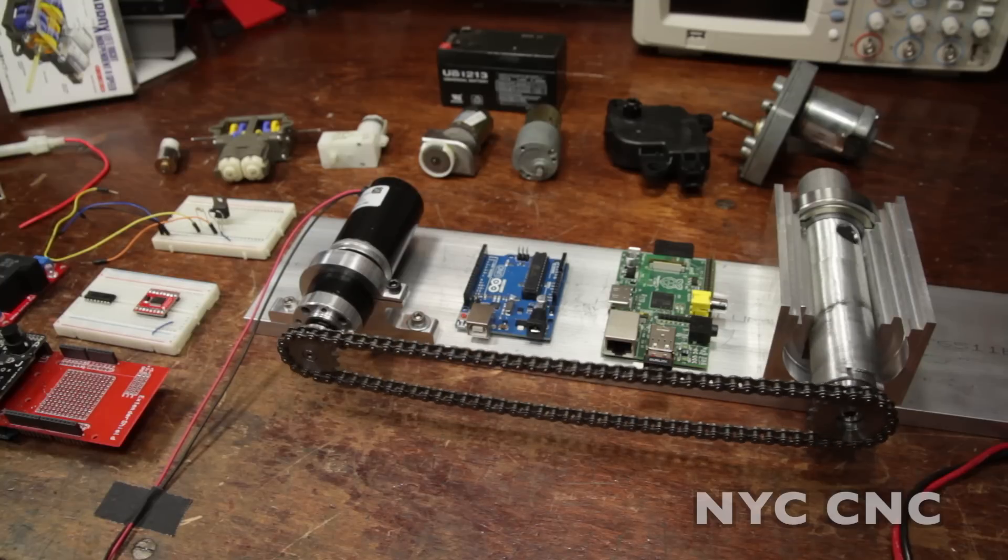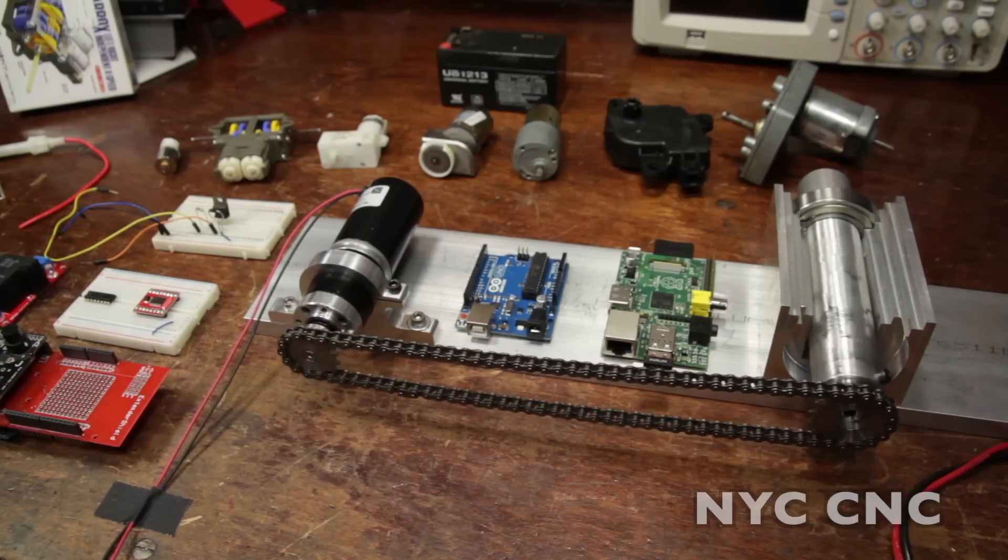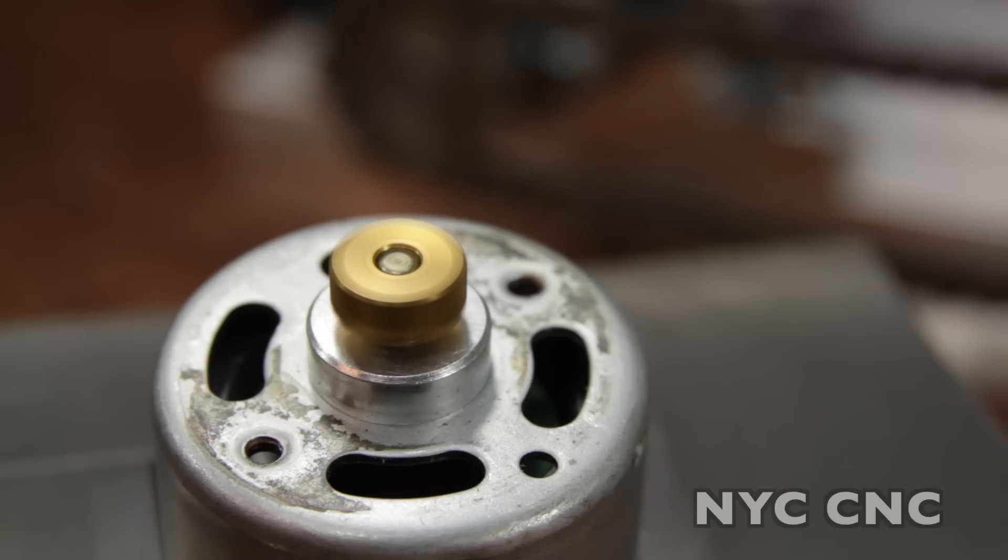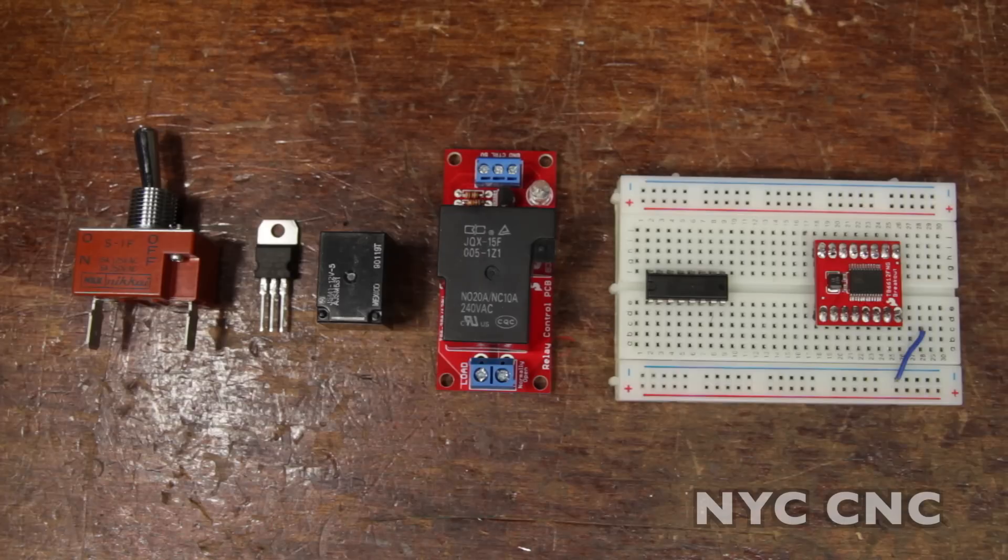DC gear motors do more than just turn. They can alternate directions, they can turn at different RPM speeds, and when properly controlled they can stop on a dime. For those of you who may be new to my video tutorials, I like to move quickly and let's dig in.